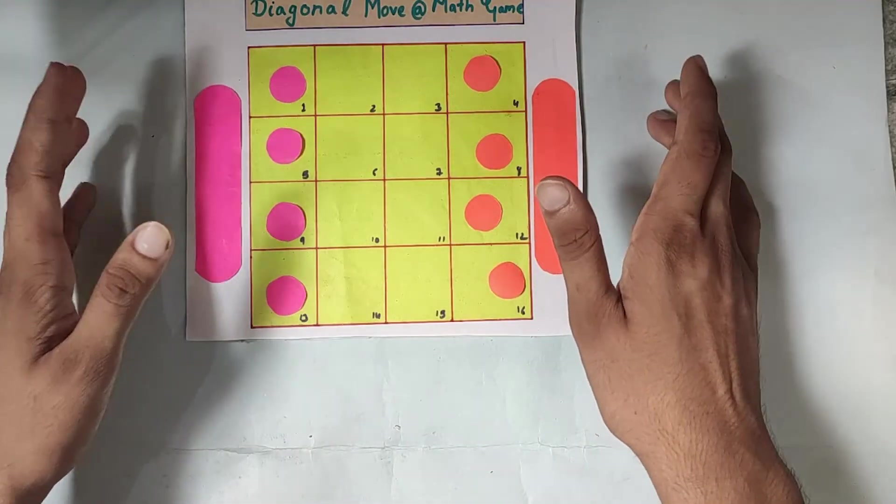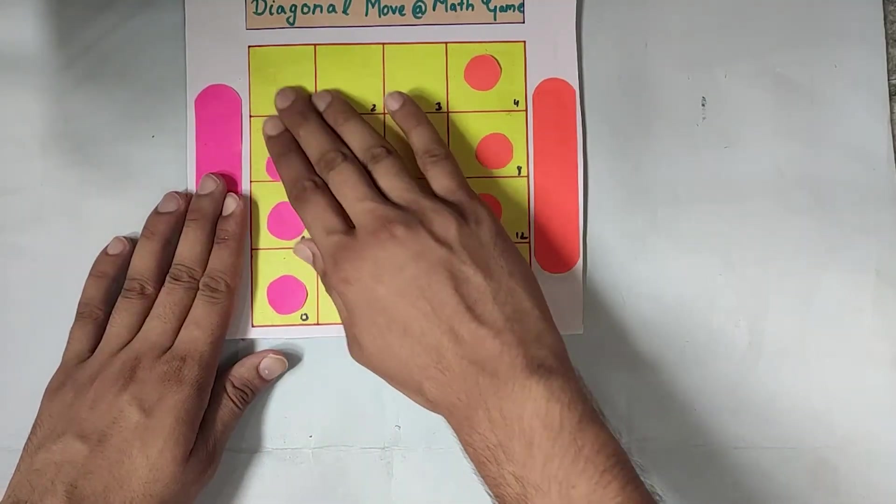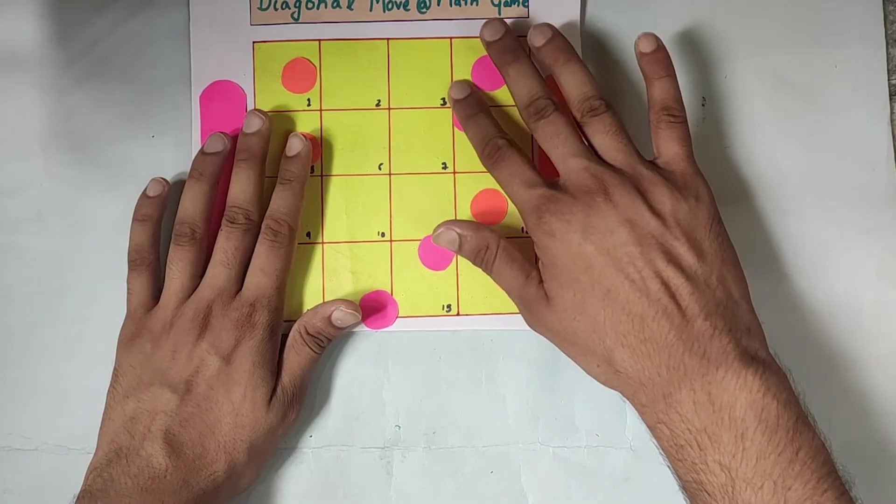Our aim is to complete in fourteen steps. As the game is not completed in fourteen steps, let's again rearrange this. Let's again try to finish it in fourteen steps.